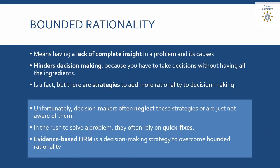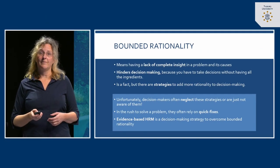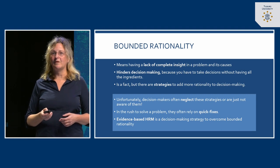Unfortunately, decision makers often neglect these strategies or are just not aware of them, and this book will make an effort to teach you about that. In the rush to solve a problem, managers rush to quick fixes. Evidence-based human resource management is a decision making strategy that can help practitioners overcome bounded rationality and base their decisions about HR problems on a more rational background in order to eventually make better decisions.